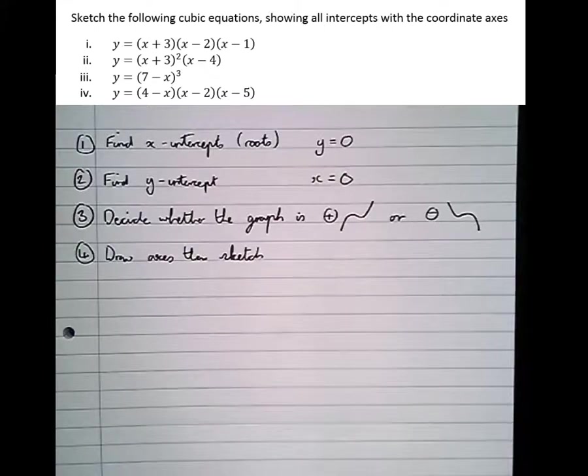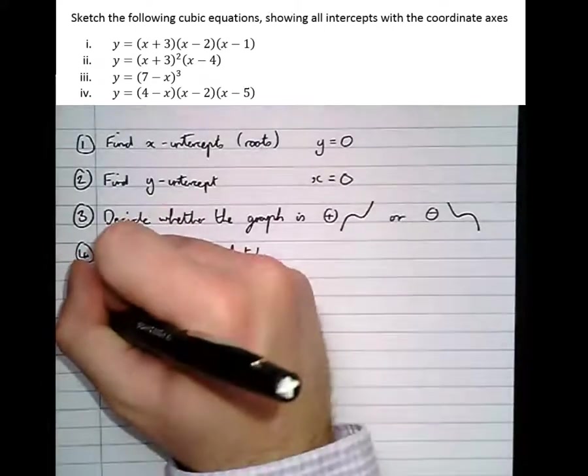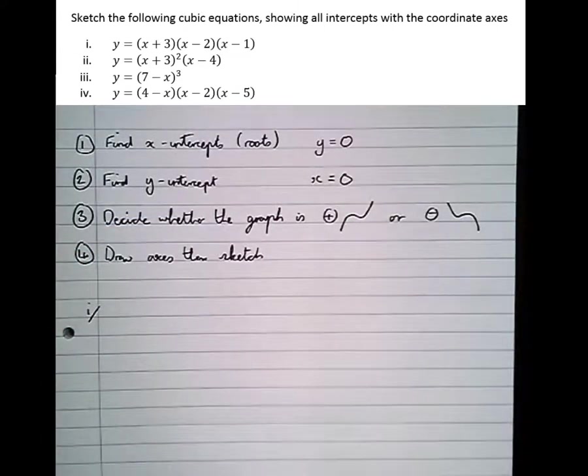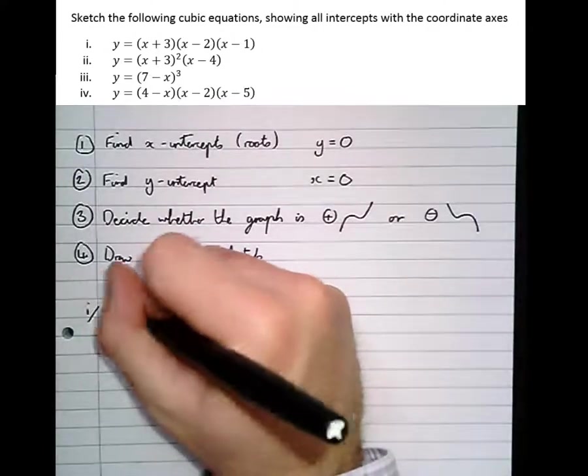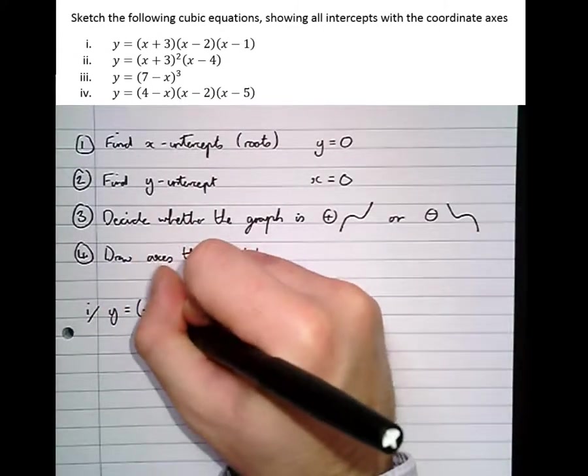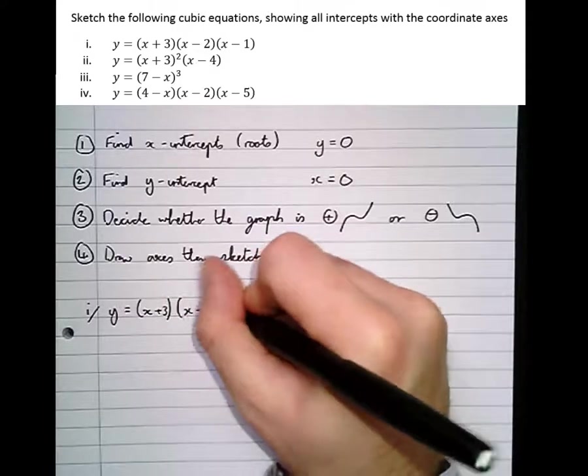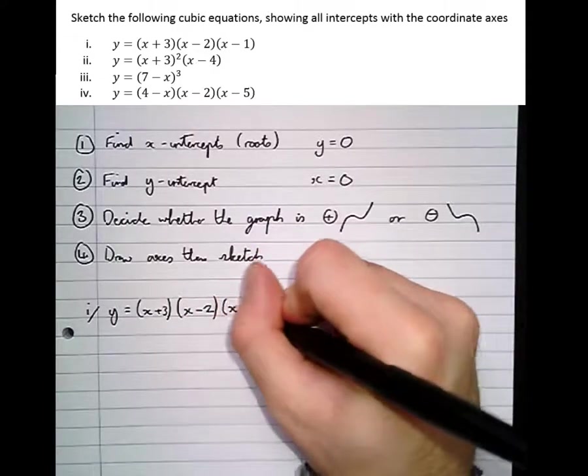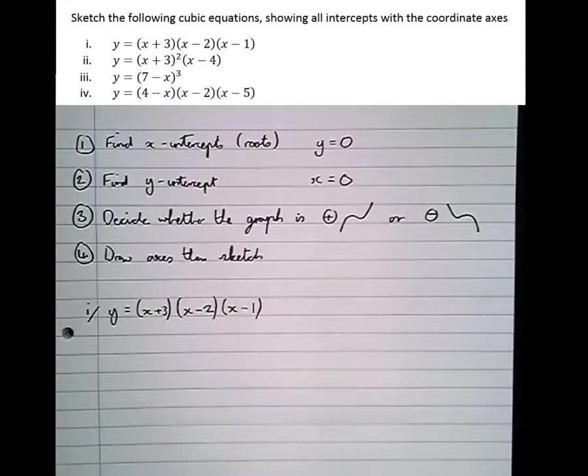So let's take this first example here, part one. It says y equals (x + 3)(x - 2)(x - 1). Now notice that all of these examples are nice and factorised. It might be feasible in an exam that you have to factorise it yourself, but for the purposes of understanding we're only going to be working with factorised equations here.